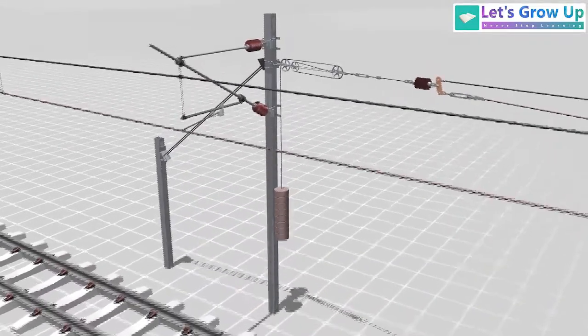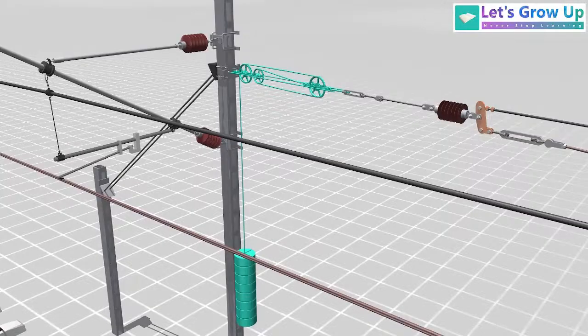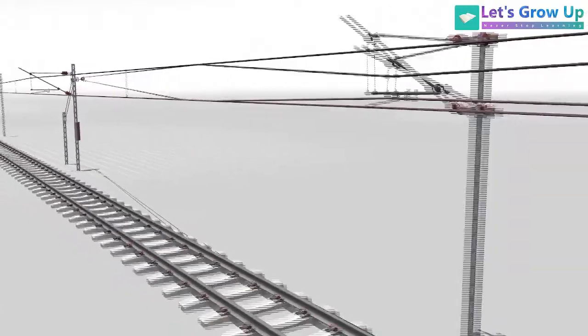Near the turnout and crossing areas, an auto-tensioning device is employed to automatically adjust the tension of the overhead electrification OHE lines.